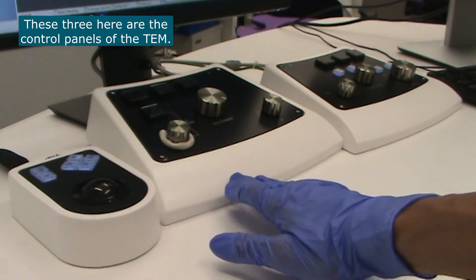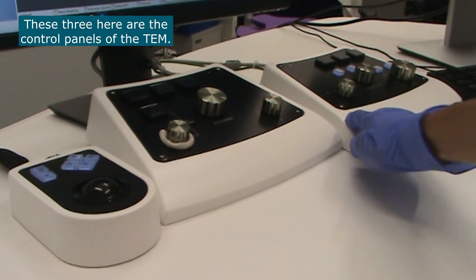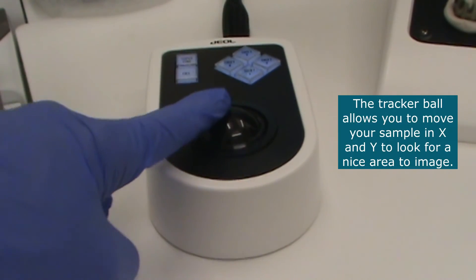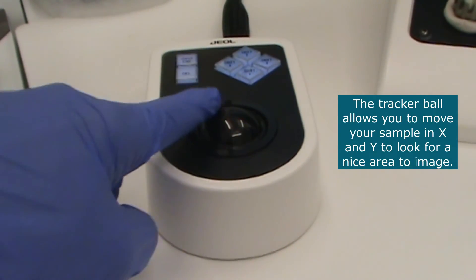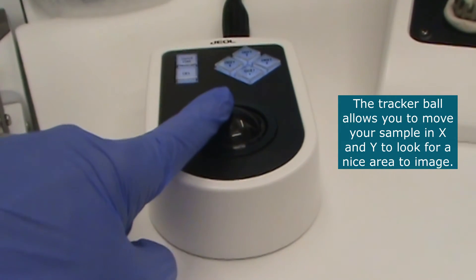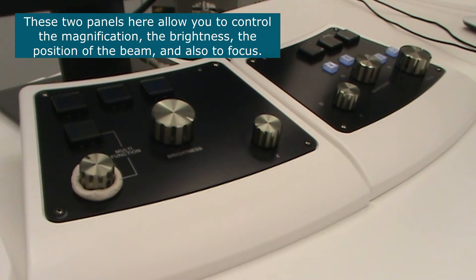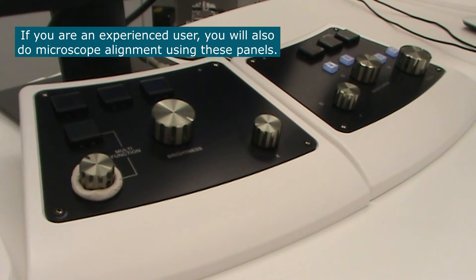These three here are the control panels of the TEM. The tracker ball allows you to move the sample in X and Y to look for a nice area to image. These two panels here allow you to control the magnification, the brightness, the position of the beam and also to focus. If you're an experienced user you will also do microscope alignment using these panels.